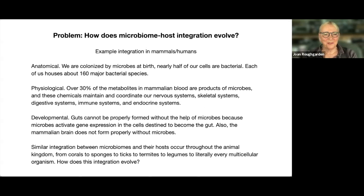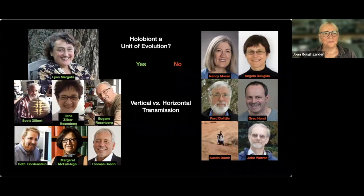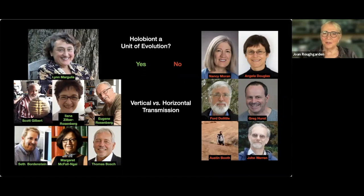Similar integration between microbiomes and their hosts occurs everywhere — from corals to sponges to ticks to termites to legumes to everything. The big question is: how does this integration evolve? There's been controversy about whether this integration can be explained by viewing the holobiont as a whole as a unit of evolution, and whether selection on holobionts as a unit can explain the integration.